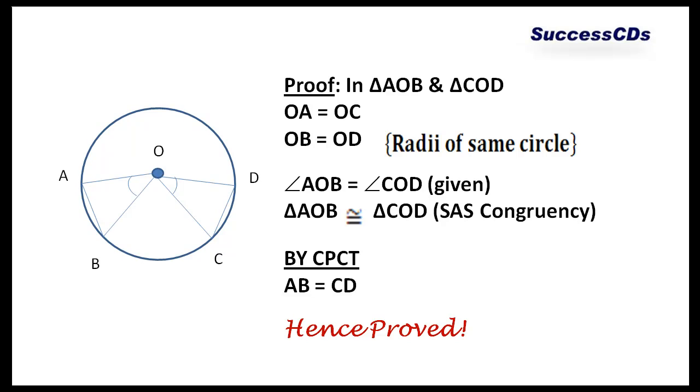If we look at triangle AOB and triangle COD, OA and OC are equal to each other, radii of the same circle. Similarly, OB and OD are equal to each other, radii of the same circle.